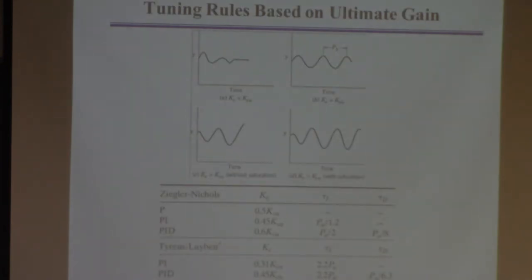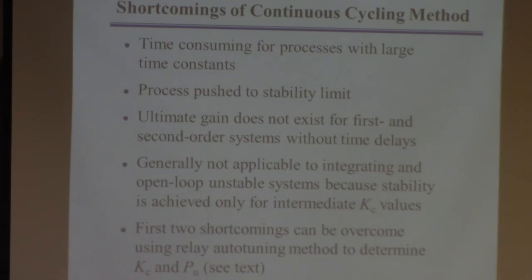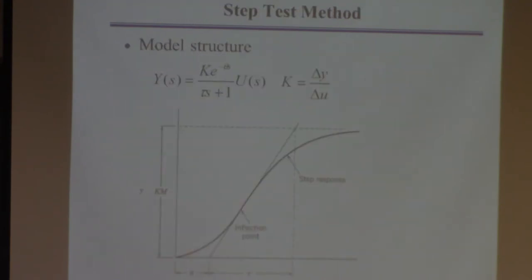We came up with this idea that if you could come up with the ultimate gain and ultimate period, which means the largest gain that you can use such that you get sustained oscillations but they don't grow, they're sustained, and the associated period of those oscillations, you could also use this to tune PI and PID type controllers. And then I did mention that there's a way to do this automatically using relay autotuning that's described in the book.